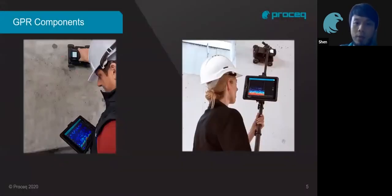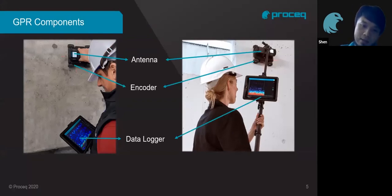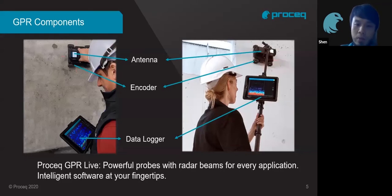For a GPR component, it's actually very simple. First, we have the antenna. Second, we have the encoder. Data is captured and then passed on to a data logger — in our case, we use an iPad as the data logger. Using an iPad has its advantages: powerful hardware combined with intelligent software at our fingertips, enabling many unique and special applications.